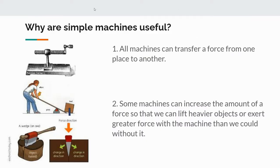Why are simple machines useful? All simple machines can transfer force from one place to another. If you have something like a lever, it transfers a force from where you are to all the way down at the other end. Same thing with a wedge — from the top all the way down to the bottom. A clamp changes a turning motion into a pushing motion. Some machines can also increase the amount of force, so you can lift a heavier object or exert greater force with a machine than without it.